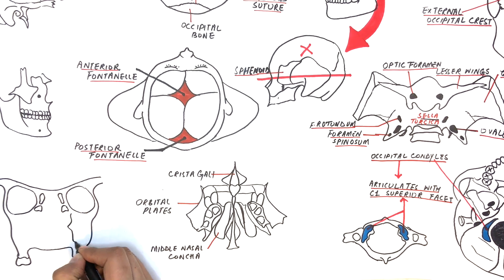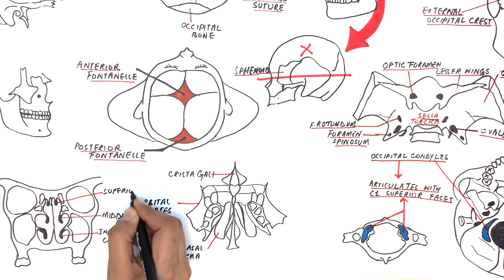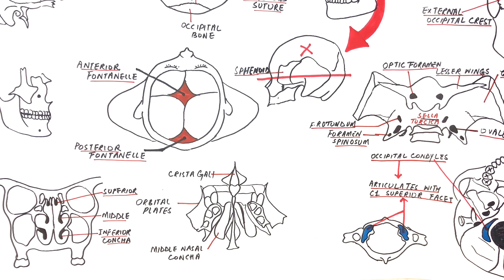Let's suppose this is the coronal section of the skull. We can see here the three conchae, which are the inferior nasal concha, the middle, and the superior nasal concha. The inferior nasal concha is completely a separate entity and is not related to the ethmoid bone, while the middle and the superior nasal concha belong to the ethmoid bone.